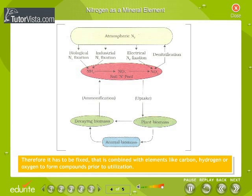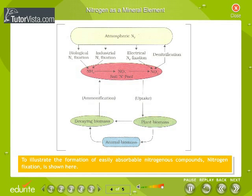Therefore, nitrogen has to be fixed, i.e., combined with elements like carbon, hydrogen or oxygen to form compounds prior to utilization. This process of conversion of atmospheric nitrogen into nitrogenous compounds to make it available to plants for absorption is called nitrogen fixation. To illustrate the formation of easily absorbable nitrogenous compounds, nitrogen fixation is shown here. Note the various reactions involved in this process.